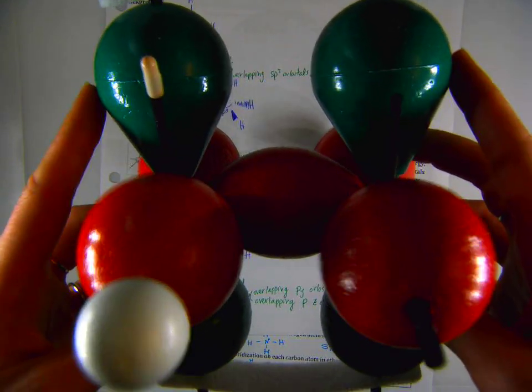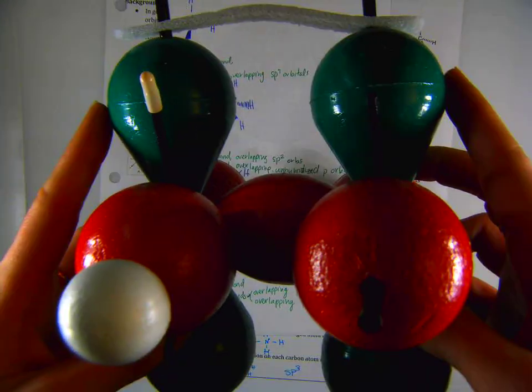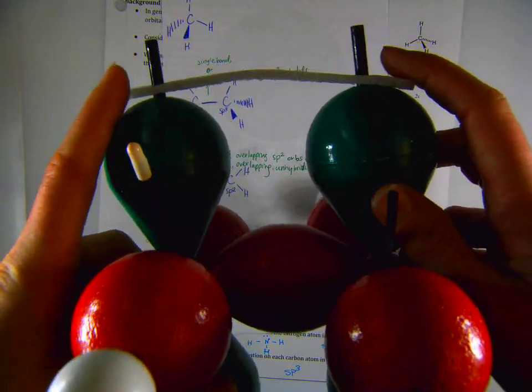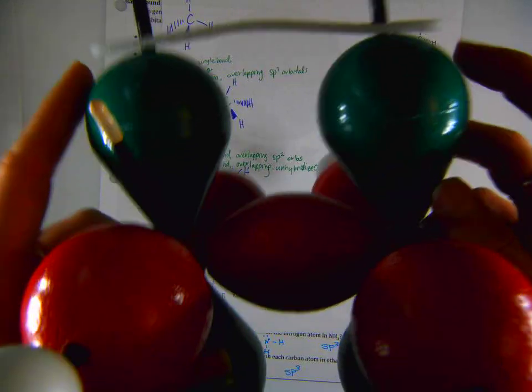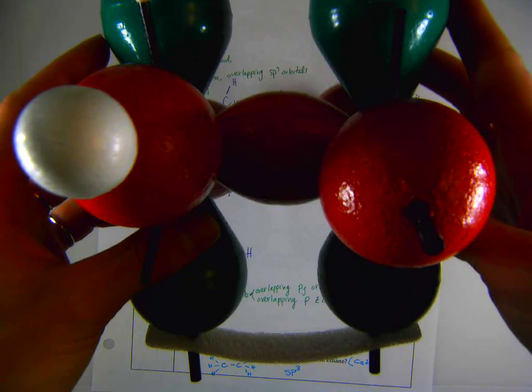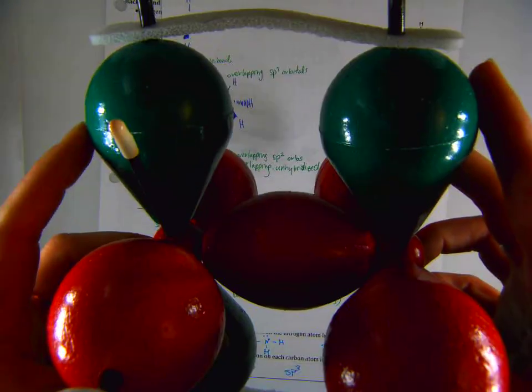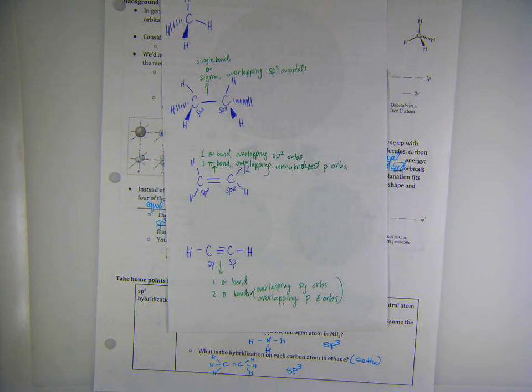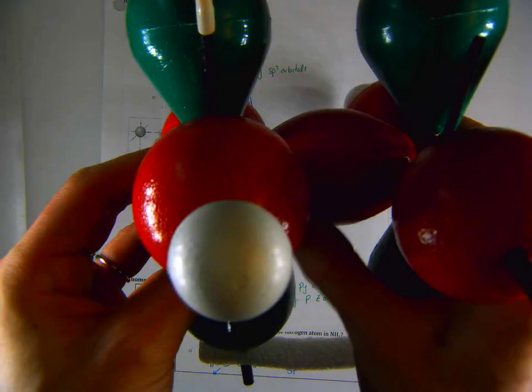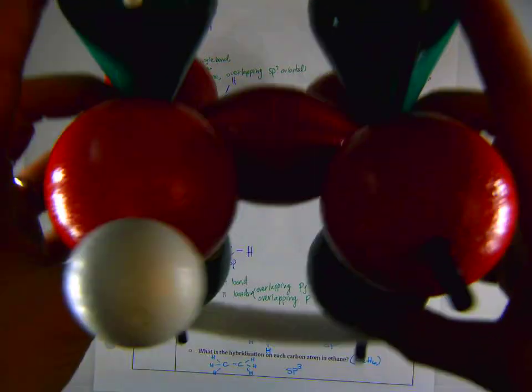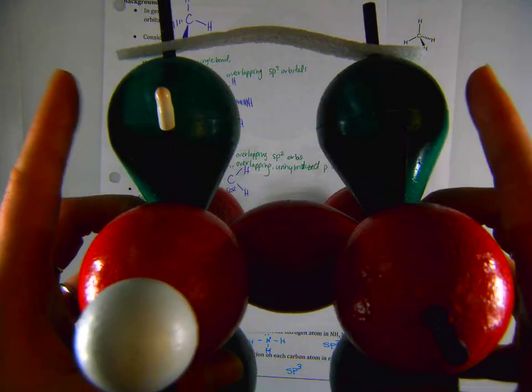But now these p orbitals that are unhybridized have overlapping regions that you can't really see in this model, but that we've represented by this white foamy piece going across the bond. So above and below there's a little bit of p overlap and that's our pi bond. That is what the second portion of the double bond is where it's coming from. So one sigma across the center, one pi bond.